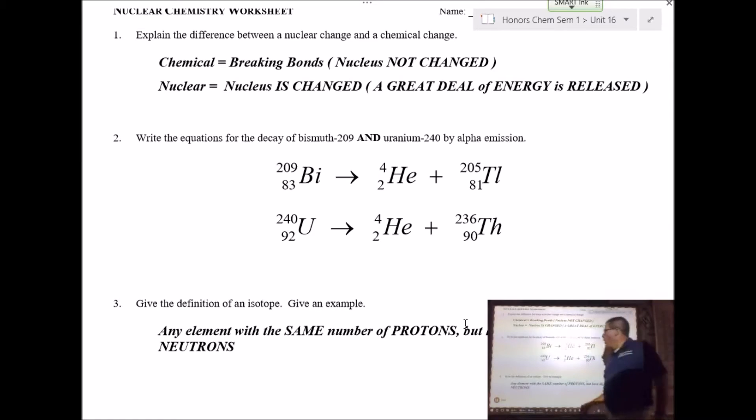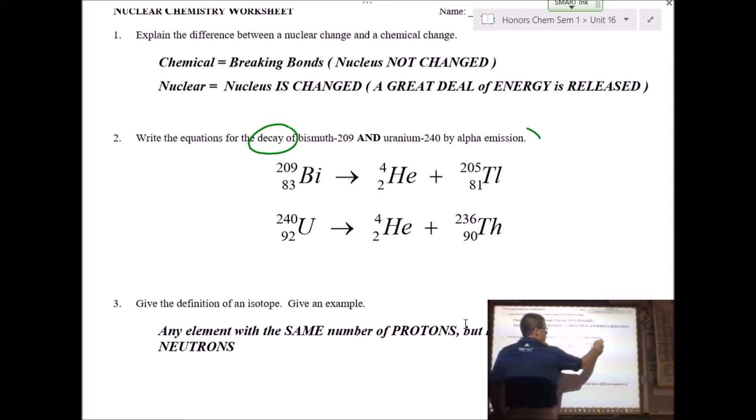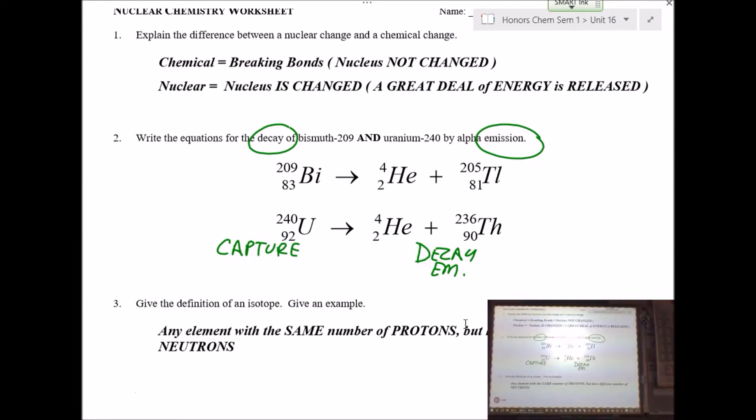Be sure that you know what decay means, or what emission means. So, decay and emission occur on this side, emission, and then capture would occur on this side. Okay, so if I had alpha capture, then my alpha particle would have been on this side of the arrow. And yes, it does matter what side of the arrow that your particle is on, because it will definitely change the outcome of what it is that we have or what we're looking for. So make sure you know those terms, decay, emission, and where they are represented in the nuclear equation.